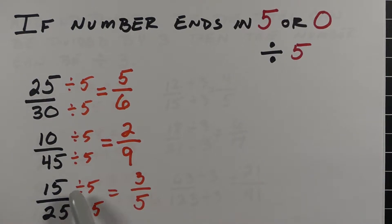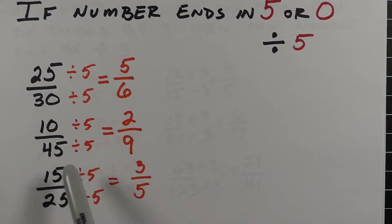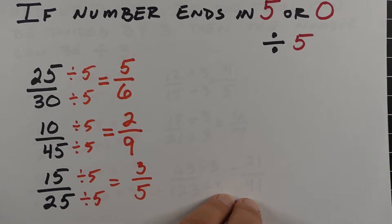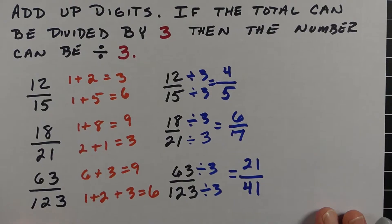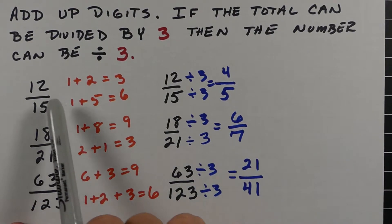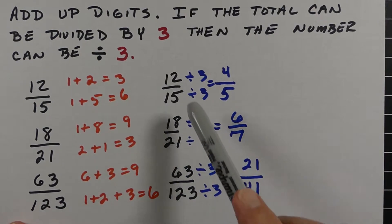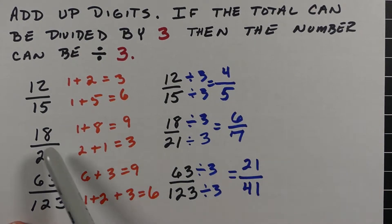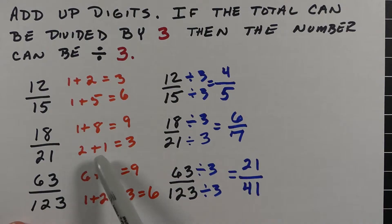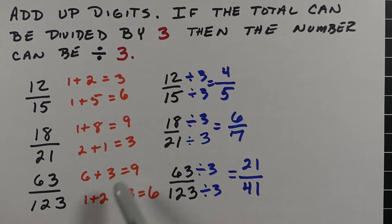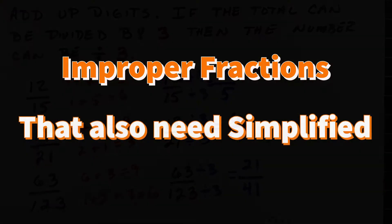If you have numbers that end in 5 or 0, you know that 5 will divide into both. For example, with 25/30, that 5 and 0 means 5 is going to divide into both. If you add up the digits in the numerator and the result is divisible by 3, and the same goes for the denominator, then 3 will divide into both numbers. You can see examples here where adding up the digits gives a number divisible by 3, confirming those fractions can be divided by 3.